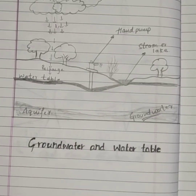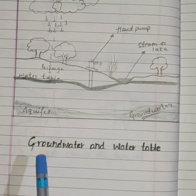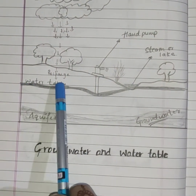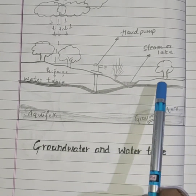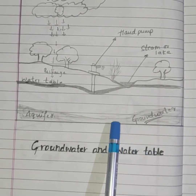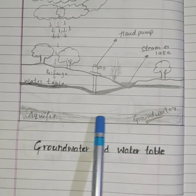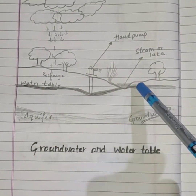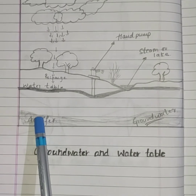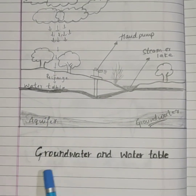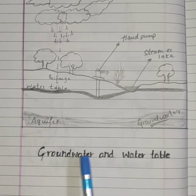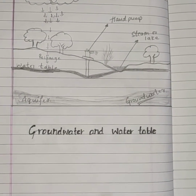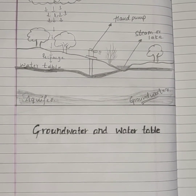Now, come to the last diagram: groundwater and water table. Here you can see this is the water table, and below the water table you will get the groundwater. This is a hand pump, this is a lake, and this is an aquifer. This is the last diagram — groundwater and water table — from your science textbook of 7th standard.